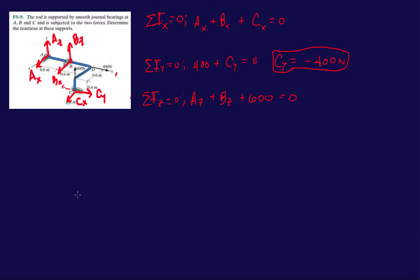Alright, that leaves us with five unknowns total and three equations, so that forces us to use the moment equations. We're going to do moments about the X-axis first. Let's locate the forces that are on the X-axis — AZ and AX are sitting on the X-axis at the origin, so those two won't contribute any moment to the X-axis.